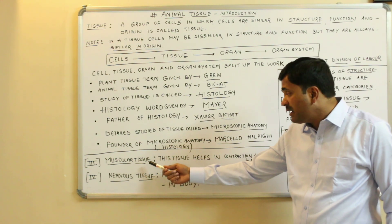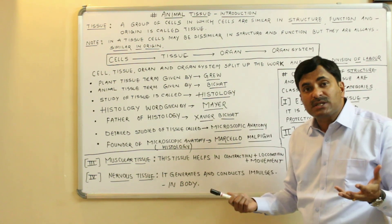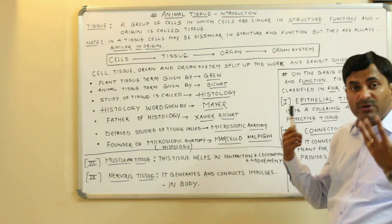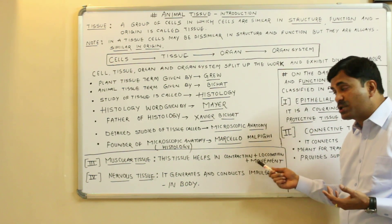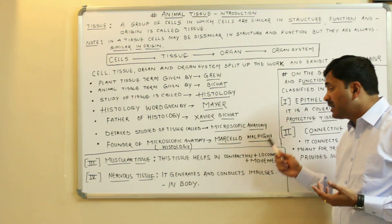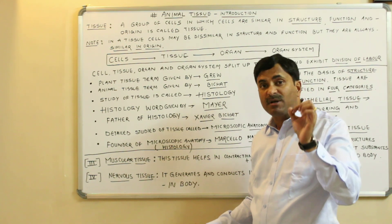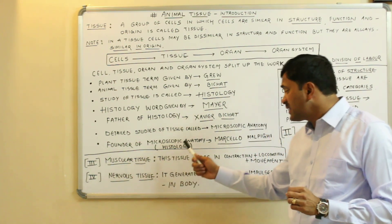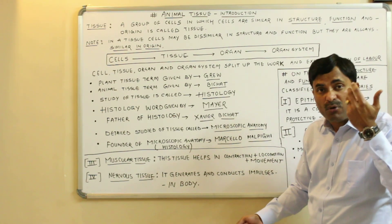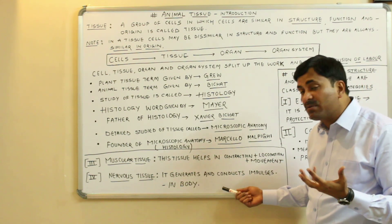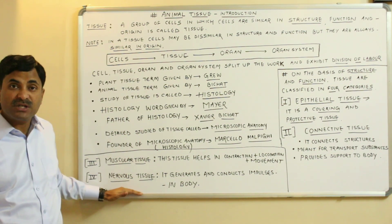Muscular tissue is concerned with movement, locomotion, and contraction — it helps in contraction, movement, and locomotion. The last type is nervous tissue, the most important tissue in the animal body, because it is responsible for the generation and conduction of impulses. So altogether there are four types: epithelial tissue, connective tissue, muscular tissue, and nervous tissue.